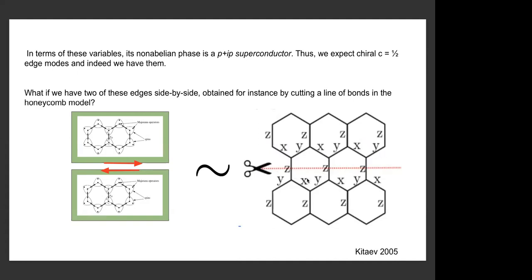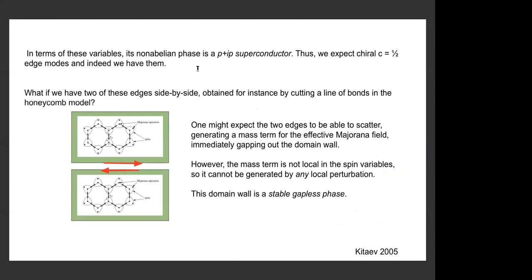Now the question is what happens when we take two of these edges and place them side by side. One way to obtain this is to take the Honeycomb model and simply cut out a line of bonds, producing two decoupled edges with chiral modes going in opposite directions. From the P-wave superconductor point of view, any interaction between these two edges might generate a mass term for the Majorana, and once we have that mass term the domain wall would be immediately gapped out. However, this doesn't happen — the mass term ends up not being local in the spin variables of the Honeycomb model, which means it cannot be generated by any coupling between these two edges. The mass is the only relevant operator of this effective Majorana field, so since it's not allowed, this domain wall is actually stable. This is a stable gapless phase in the phase diagram of domain walls.